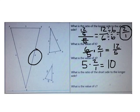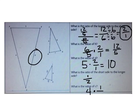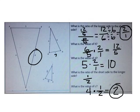We can also go the other way. What's the ratio of the short side to the longer side? If the ratio of long to short is 2 to 1, then the ratio of short to long is 1 to 2. To find the value of c, I can multiply 4 times 1 half. 4 times 1 half is 2. The value of c is 2.